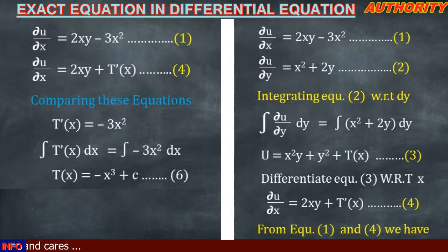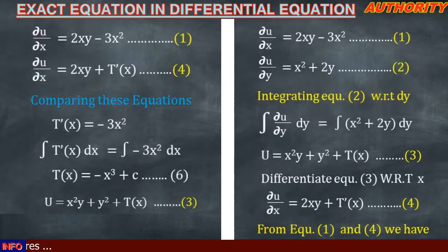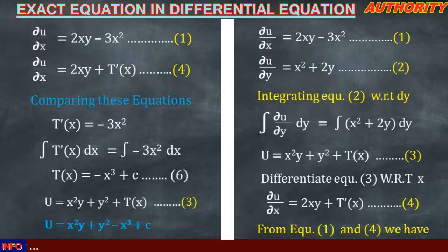We are looking for u, and from equation 3 we have u = x²y + y² + t(x). Now we have found t(x) = −x³ + c. Substituting this in, the solution to the differential equation is: u = x²y + y² − x³ + c.